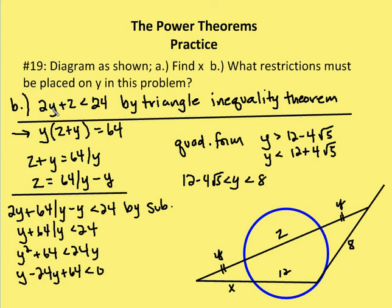Substituting Z into the inequality: 2Y plus (64 over Y minus Y) is less than 24. Simplifying, 2Y minus Y leaves Y, so Y plus 64 over Y is less than 24. Multiplying all terms by Y: Y squared plus 64 is less than 24Y. Subtracting 24Y from both sides: Y squared minus 24Y plus 64 is less than zero. Using the quadratic formula, Y is greater than 12 minus 4 root 5, and Y is less than 12 plus 4 root 5.